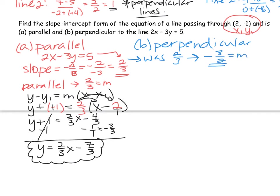Everything else, as far as process, stays the same. We're going to plug in what we know into y minus y1 equals m times x minus x1. Again, we'll have y minus negative 1 equals m, which is now negative 3 halves, times x minus 2. From here, everything stays the same.